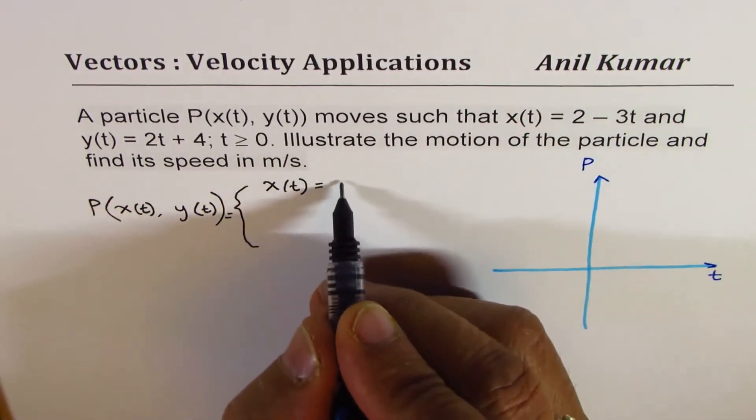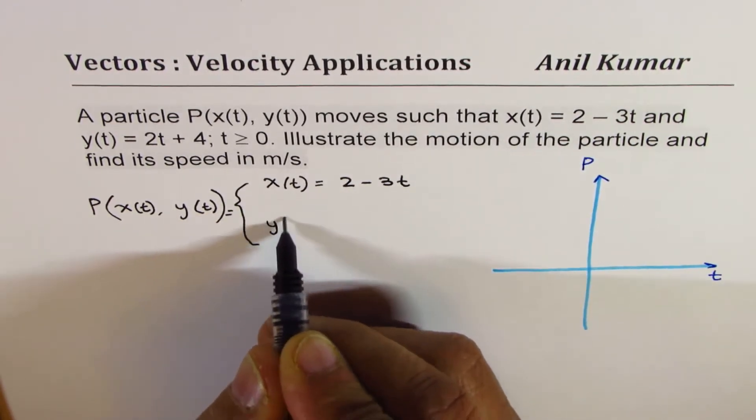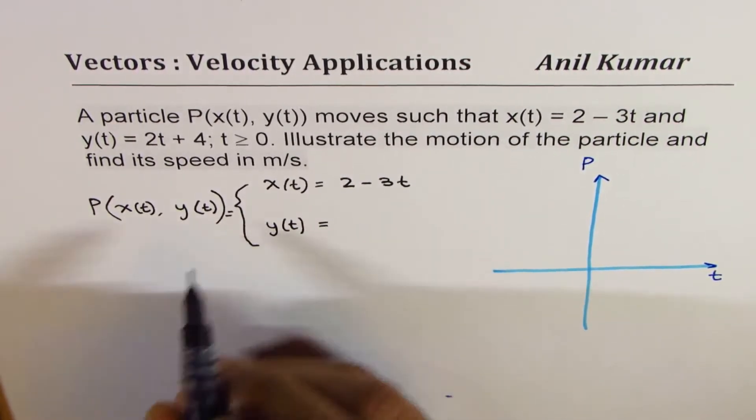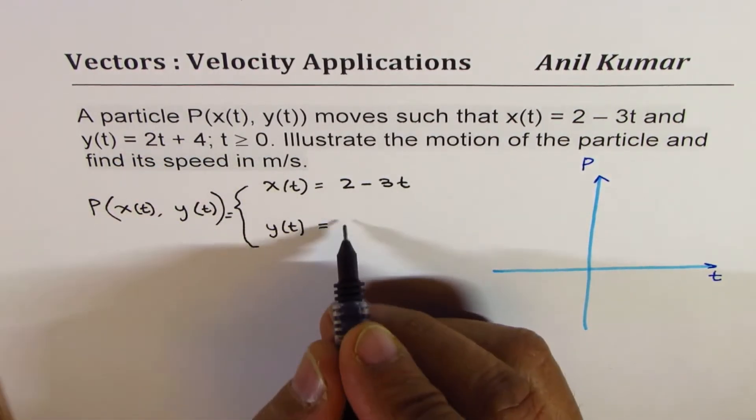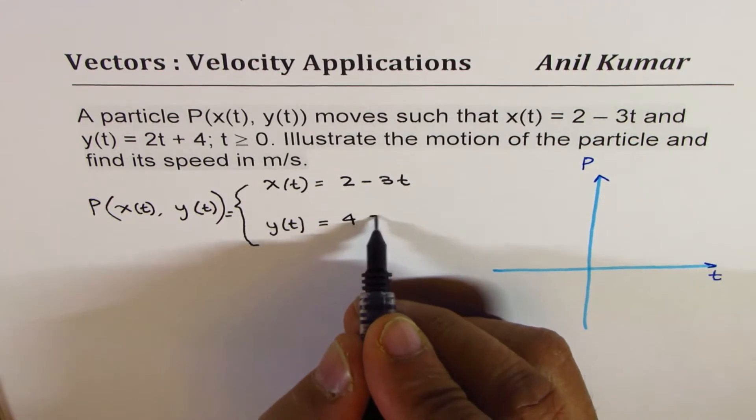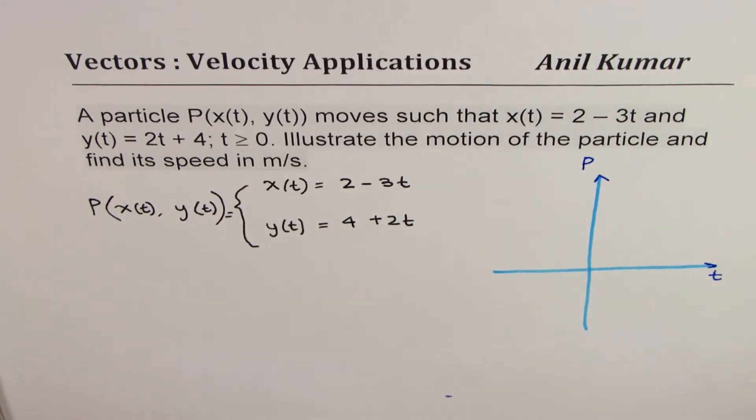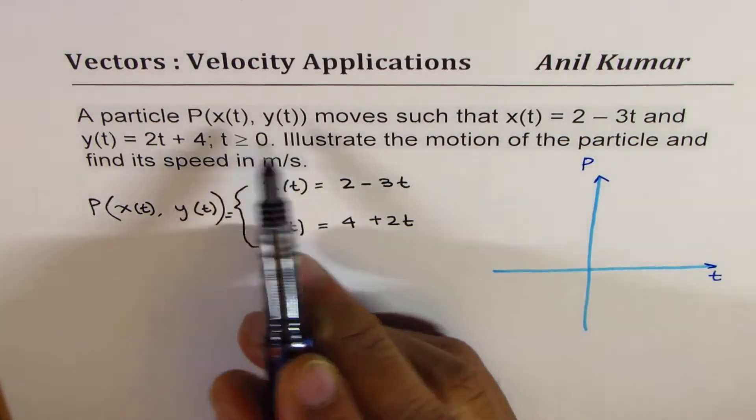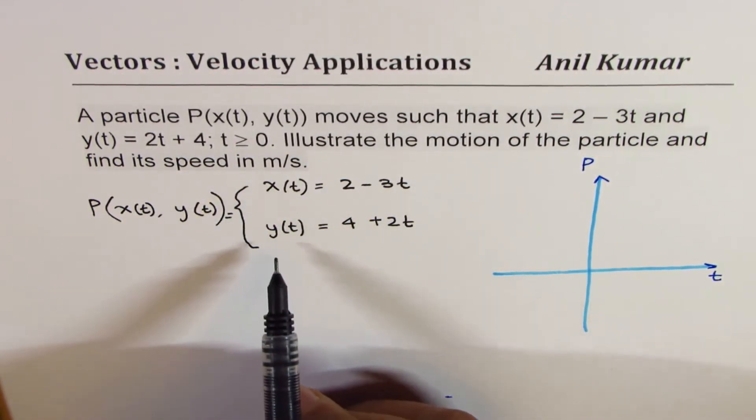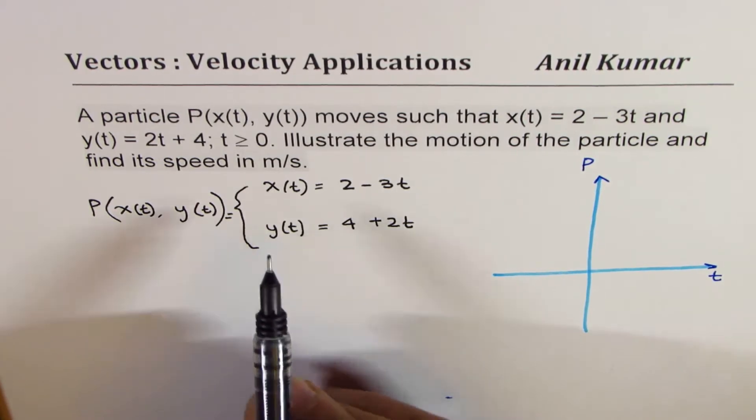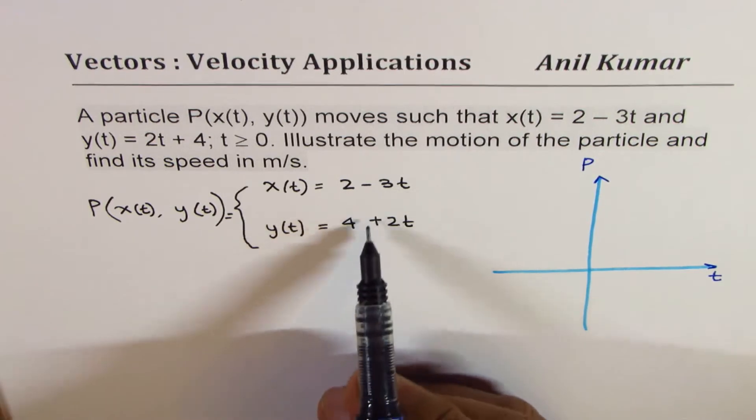This is actually equal to, we can say, x(t) equals 2 minus 3t and y(t) is equal to 2t plus 4. It's good to write 4 first—that's the convention: 4 plus 2t. Do you get it? That is the first step to understand the position itself.